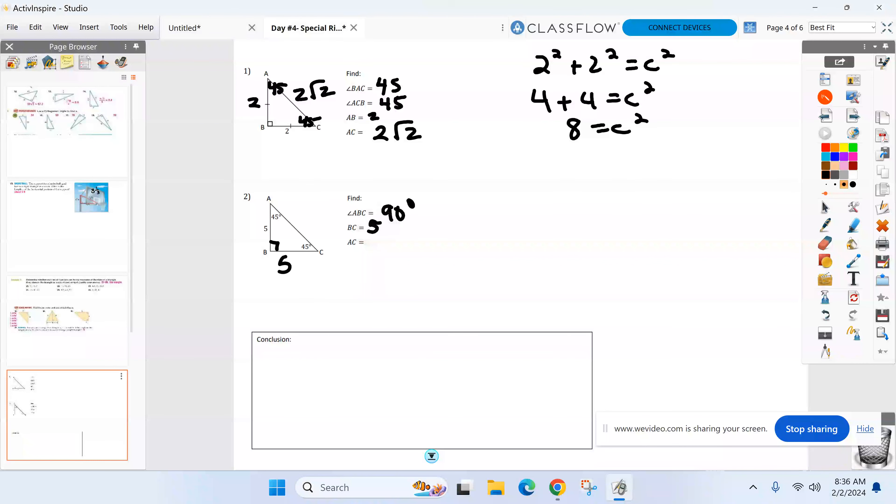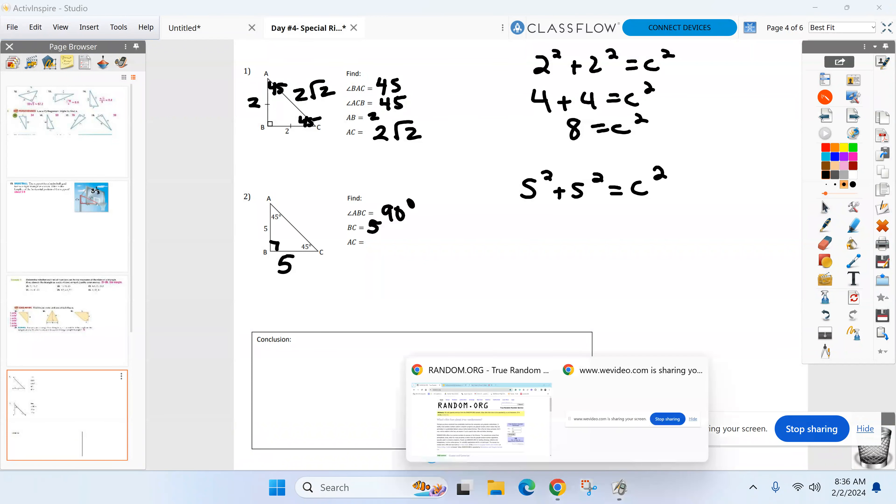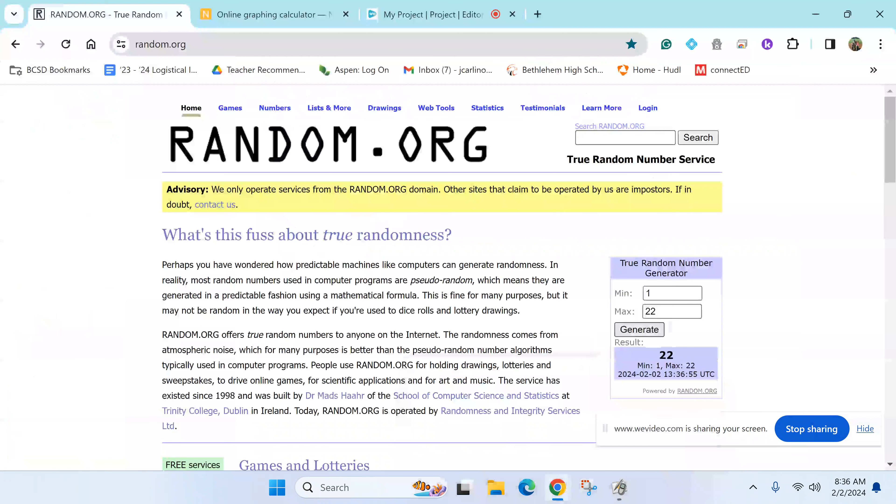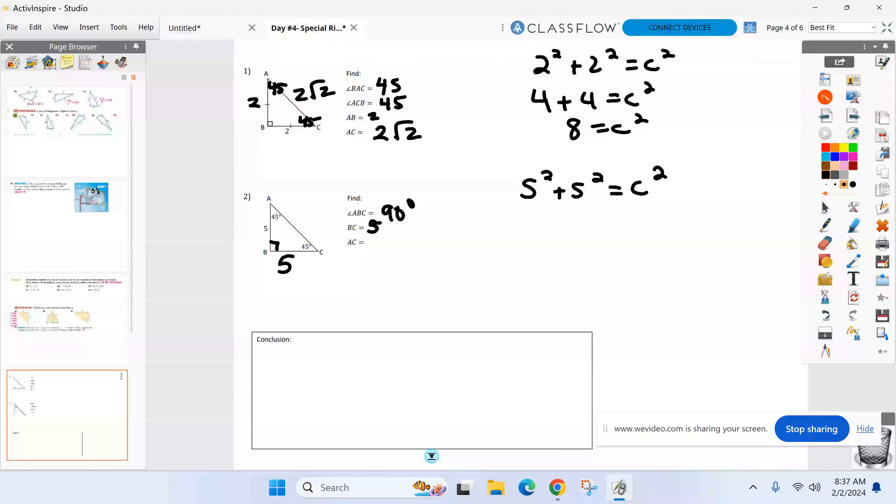And then go ahead, find AC using Pythagorean theorem, simplest radical form again. And that hypotenuse, when you get it, how long was that hypotenuse? Simplest radical form, Simon? 5√2. 5√2, got it.